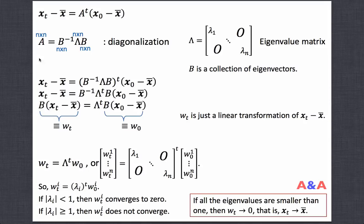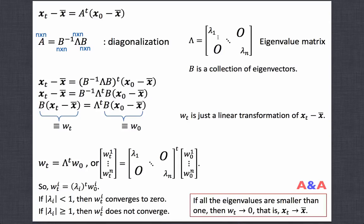Now we want to diagonalize matrix A. I will not explain details of diagonalization today — it is one section of a linear algebra textbook, and software like MATLAB will do it in seconds. Through diagonalization, matrix A is expressed as B-inverse times capital lambda times B. Capital lambda is a diagonal matrix whose diagonal elements are eigenvalues of A. Matrix B is a collection of eigenvectors: the first column of B is the eigenvector associated with the first eigenvalue, the second column with the second eigenvalue, and so on.